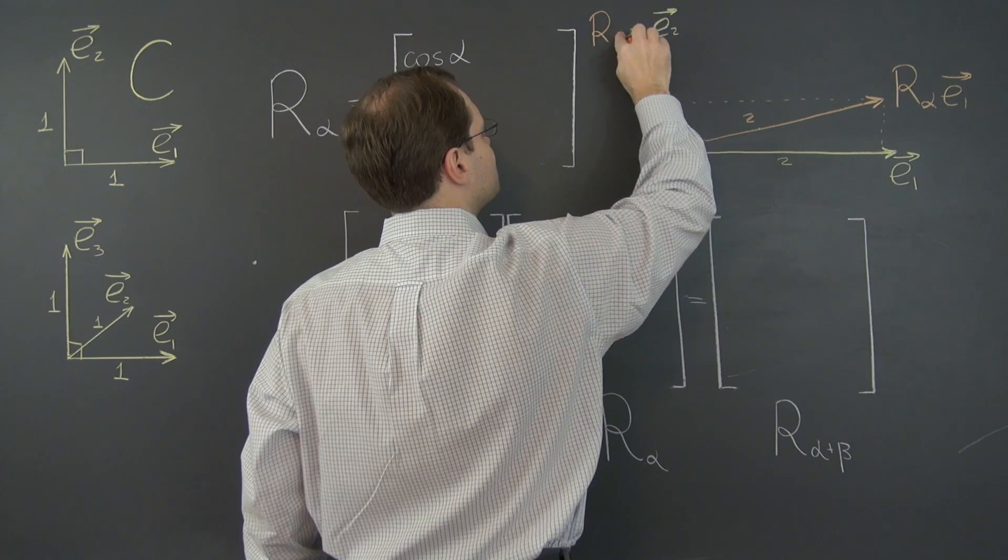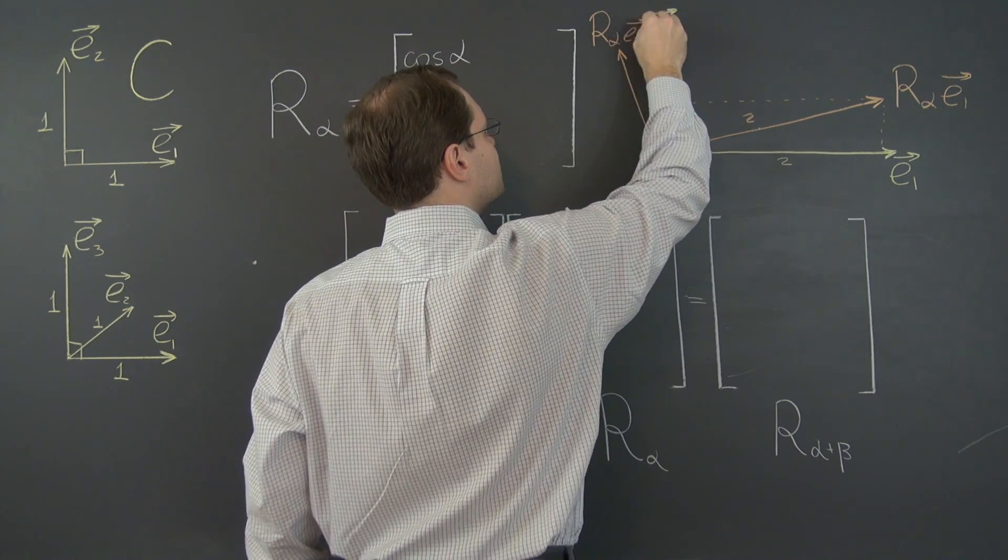And let's try to figure out its components. So it's R sub alpha of E2.